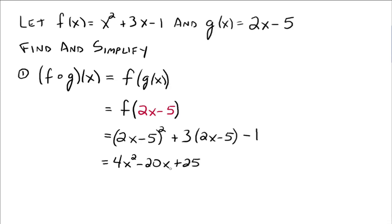All right, I'm going to leave that to you guys to figure out. Then we have plus, distribute your 3 through, 6x - 15 and then minus 1. And then just combine up like terms. So we have 4x² - 14x, because -20x + 6x is -14x, and then 25 - 15 - 1 would be a positive 9.